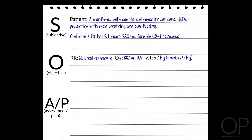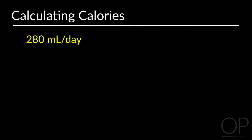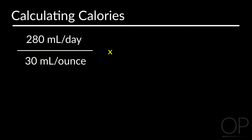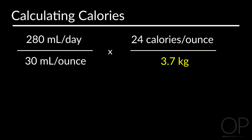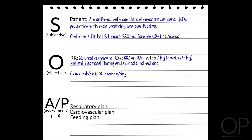Steps to calculating calories. The baby took in 280 milliliters in 24 hours. The formula has 24 calories per ounce. The baby weighs 3.7 kilograms. Take 280 milliliters divided by 30 milliliters and multiply it by the calories of the formula divided by the weight. The answer is 60 calories per kilogram per day.